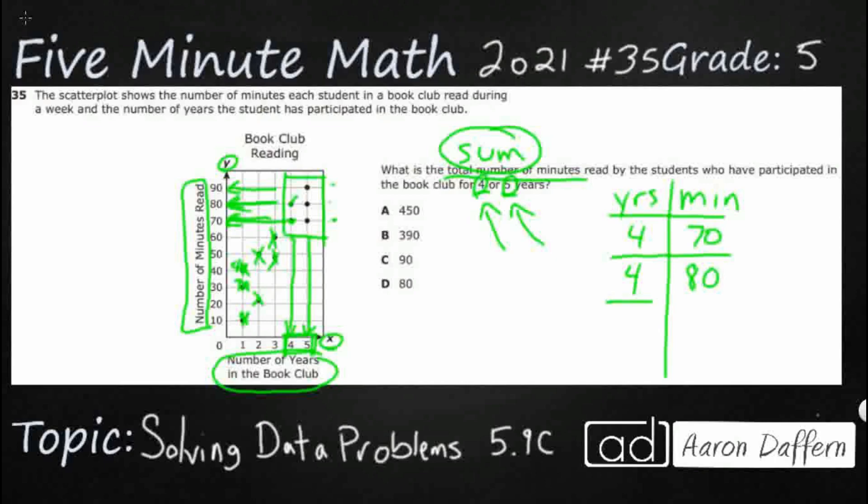And then it looks like we've got 3 that were in the 5 years in the club. And that's coming from this right here. This line right here. And I see 1, 2, 3. And let's pull these 3 numbers off.